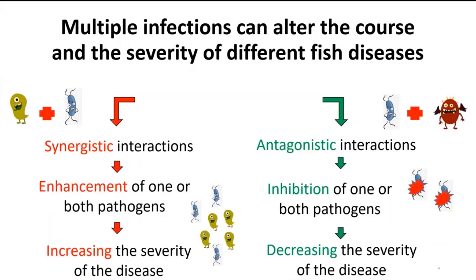On the other side, if you have two pathogens that are antagonistic to each other, one pathogen may be inhibited, or when both come together they don't help each other. That may benefit the host by decreasing the severity of the disease. Both synergistic and antagonistic outcomes can be found during co-infections in fish or shrimp disease.